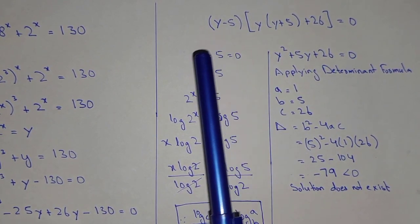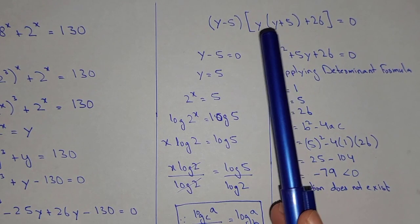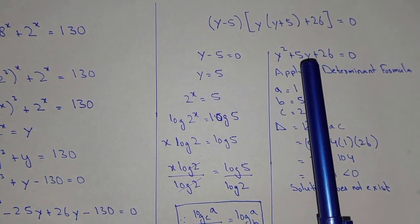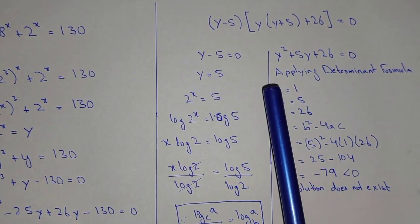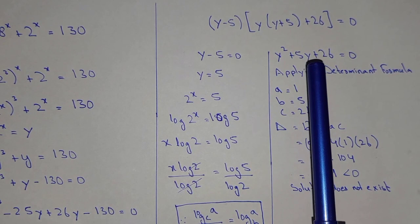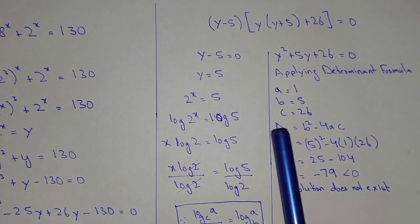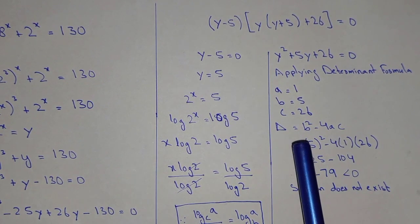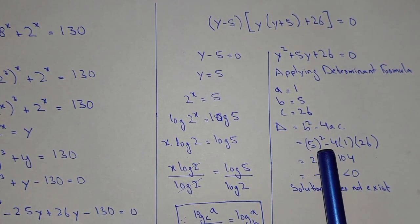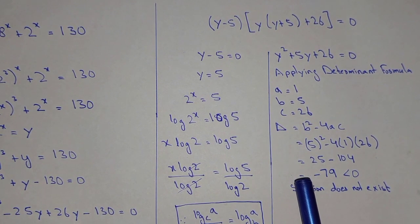Taking (y minus 5) common, we get (y minus 5) times [y(y plus 5) plus 26] equals 0, which expands to (y minus 5)(y squared plus 5y plus 26) equals 0. So y minus 5 equals 0 gives y equals 5. For the quadratic y squared plus 5y plus 26 equals 0, the discriminant is b squared minus 4ac: 5 squared minus 4 times 1 times 26 equals 25 minus 104 equals negative 79, which is less than 0. So that solution does not exist.